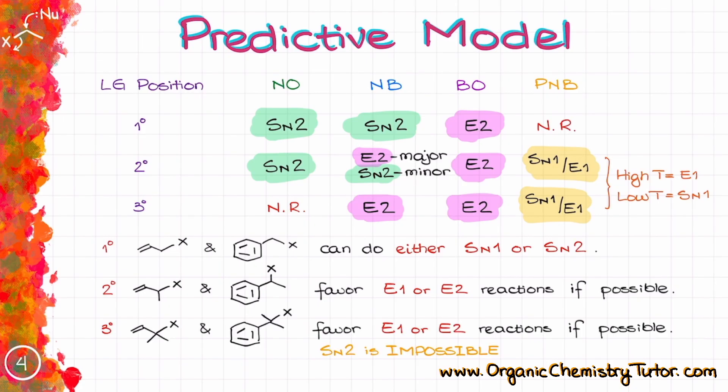Finally, tertiary allylic and benzylic positions are quite similar to the secondary ones. However, the SN2 reactions are going to be impossible due to the steric restrictions in this case.